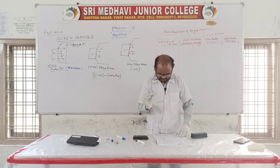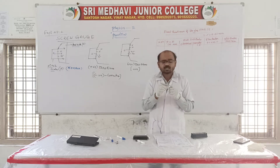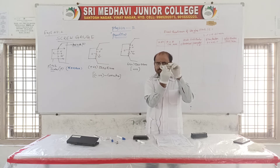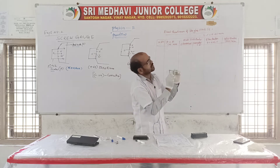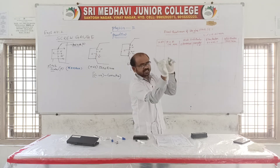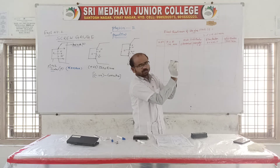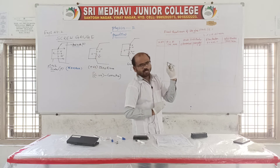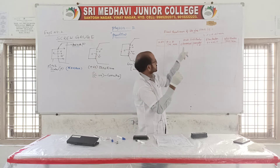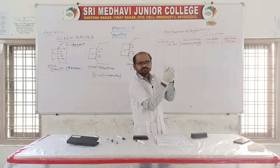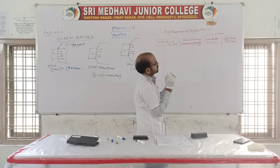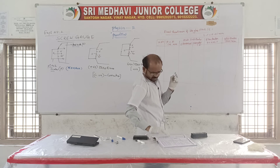After fixing, we read the scales. The head scale reading is the number on the head scale that coincides with the pitch scale line. The PSR is read from inside the pitch scale. For this instrument, the PSR is showing 2, and the head scale number coinciding with the pitch scale is observed.